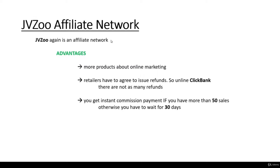As far as the advantages are concerned, JVZoo has more products about online marketing. If your niche is how to make money online, then JVZoo is the affiliate network you are looking for. Otherwise, ClickBank is a bit better because there are lots of products and retailers on ClickBank, which is not true for JVZoo. Another advantage is that retailers have to agree to issue refunds, so unlike ClickBank, there are not as many refunds. You can also get instant commission payment if you have more than 50 sales; otherwise, you wait 30 days.